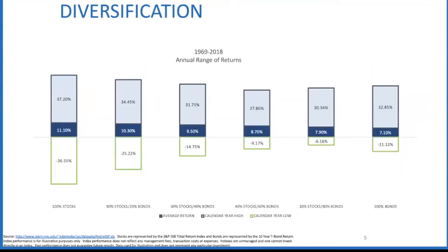That brings us to the equation of: what is the best way to achieve rates of return with this traditional diversification model? Looking at the same 50-year period, on the left side of the spectrum is 100 percent stocks and on the right side is 100 percent bonds. In the middle, 60 percent stocks to 40 percent bonds generated about a nine and a half percent return with a lesser drawdown. But this has risk — if we fall all the way down, we've got to dig out of that hole again. So 100 percent equities isn't the answer, and 100 percent bonds in today's environment is a fool's errand. We need to think about bond alternatives.